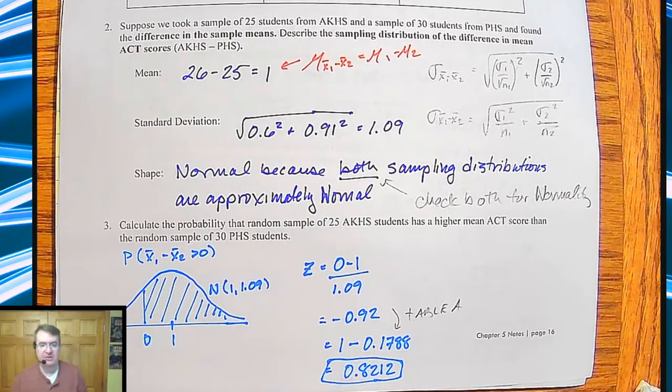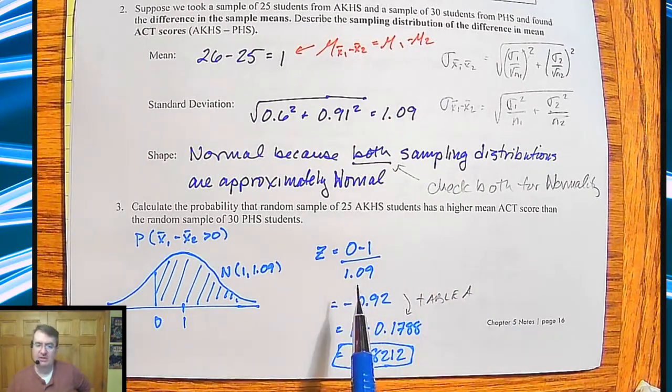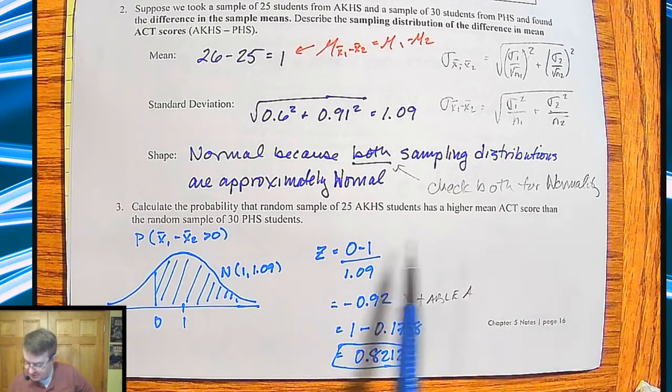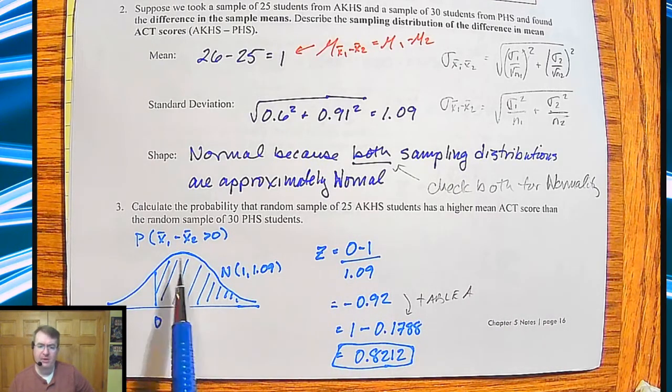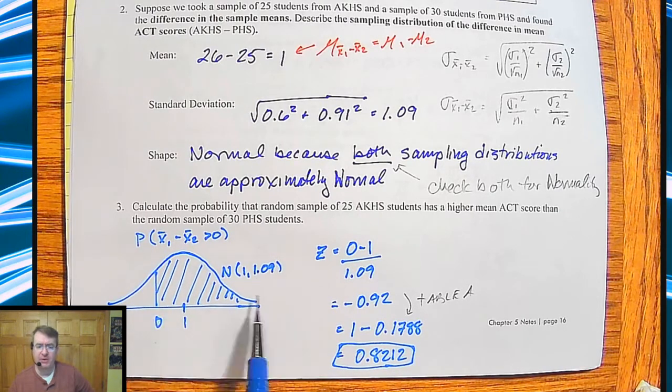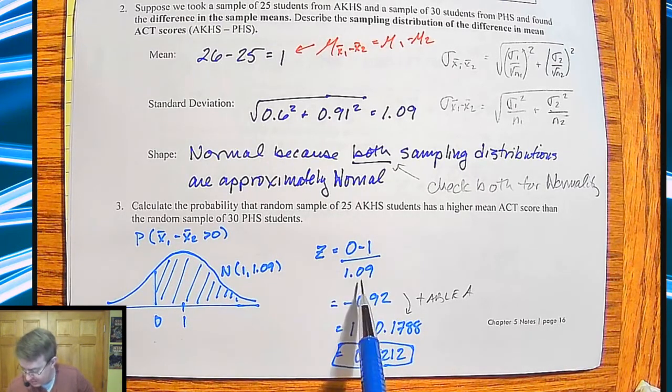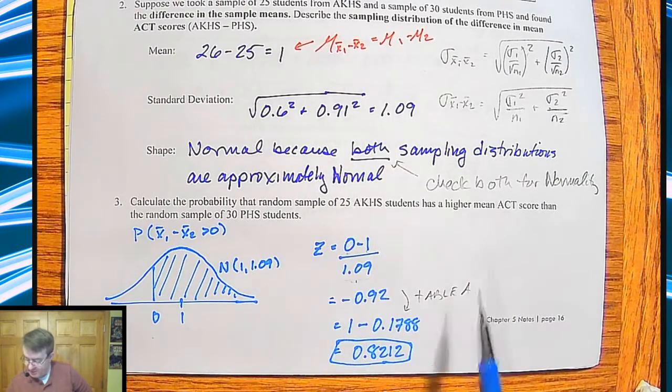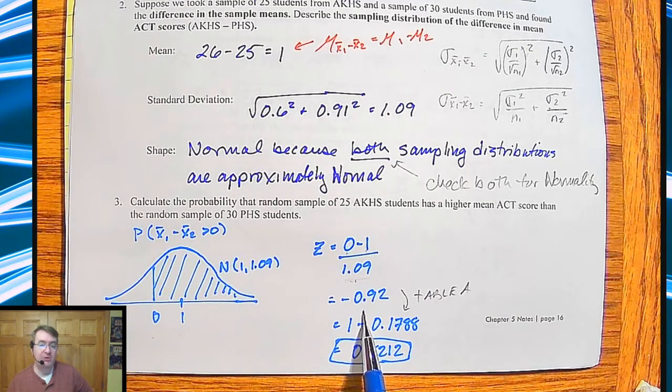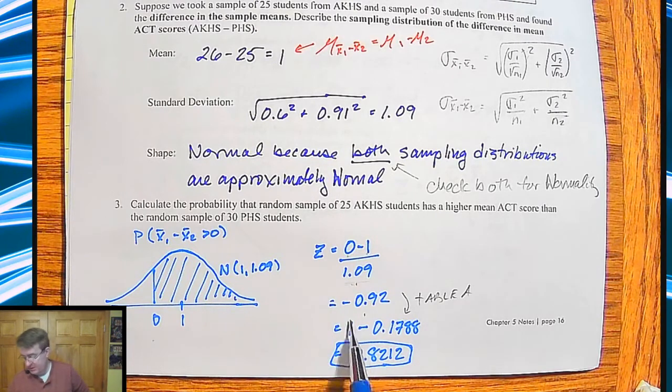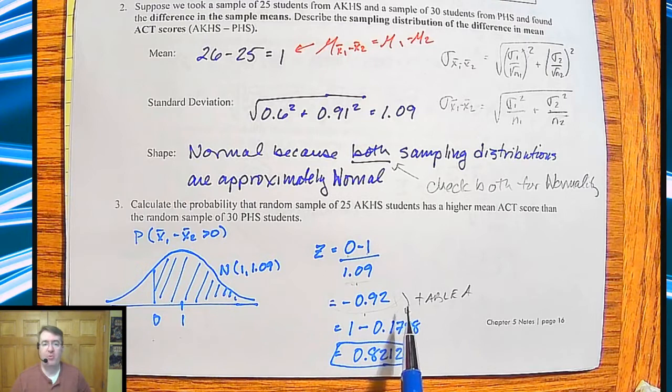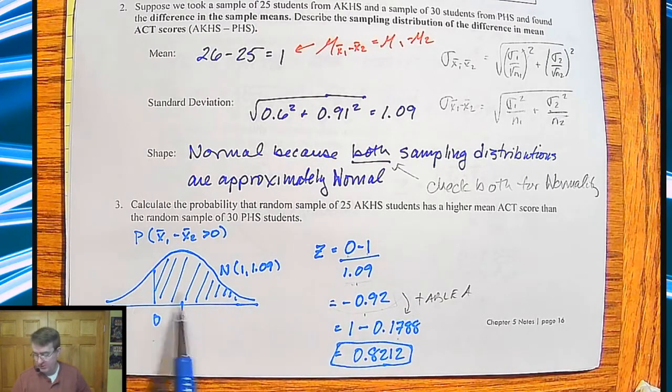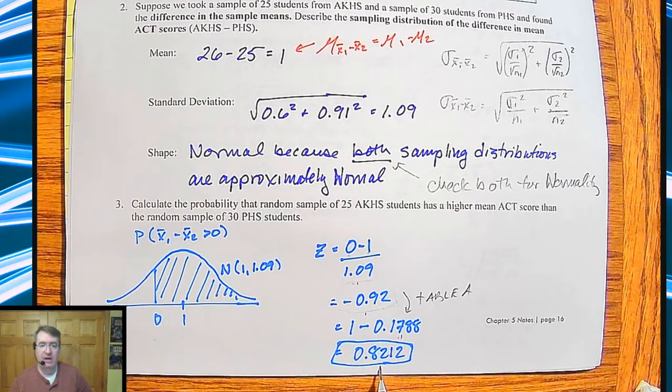Down here they ask you to calculate the probability that a random sample of 25 AKHS students has a higher mean ACT score than a random sample of 30 PHS students. So normal curve, our mean is one, there's zero, we're going bigger than that. So the z-score: sample mean minus population mean, all divided by the standard deviation, which we got above. When you calculate this out, it gives you a z-score of negative 0.92, so it's going to be relatively large because this is not that big of a z-score. We're just about one standard deviation below the mean. And then by Table A, this turns into 17.88%, and since we're going to the right, one minus that, and we get a probability of 0.8212.